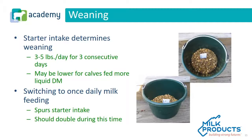Weaning: starter intake determines weaning. The calf should be consuming 3–5 pounds per head per day of quality starter for 3 consecutive days before it begins weaning. Starter intake may be lower for calves on an accelerated growth program that are fed high levels of liquid. The weaning process should involve switching the calf to one-time daily milk feeding, which will spur starter intake. Once the calf is reduced to one-time-per-day milk feeding, their starter intake should double.